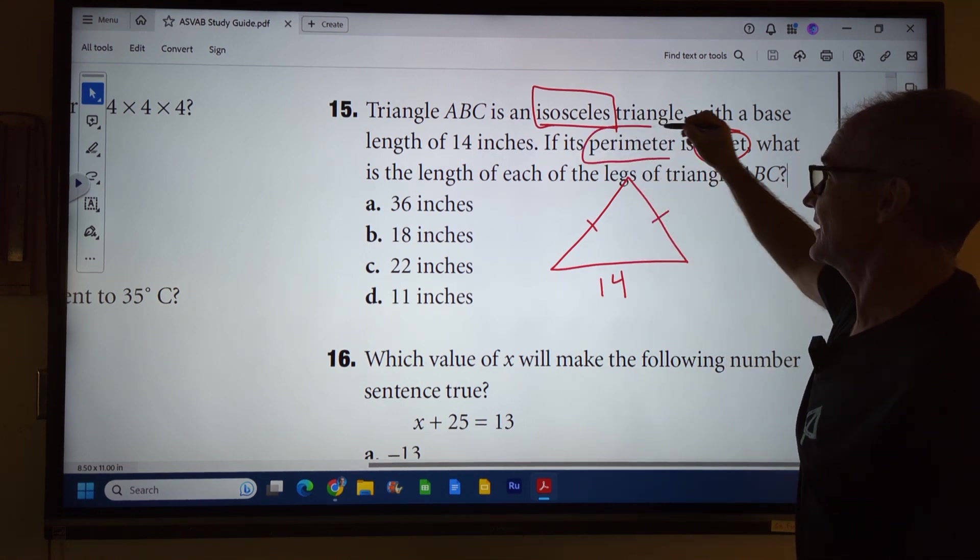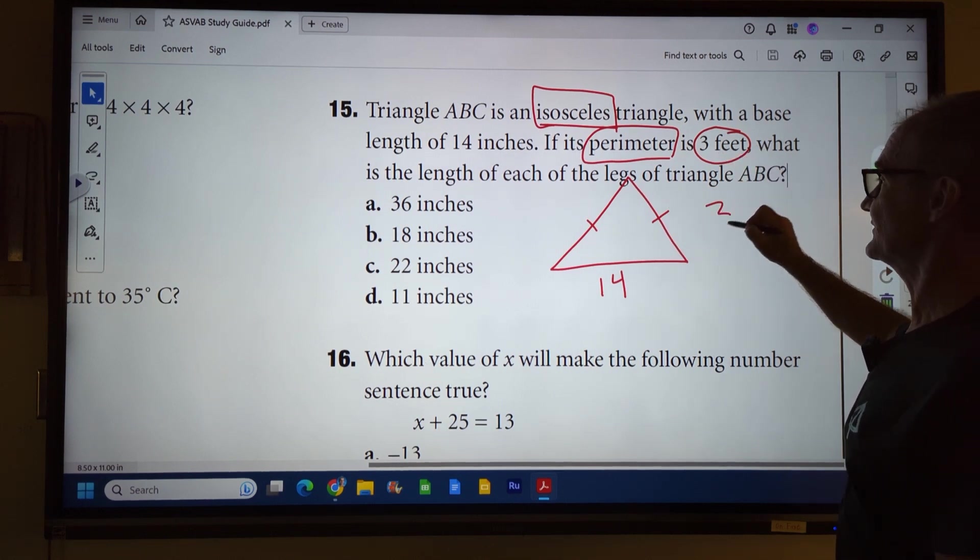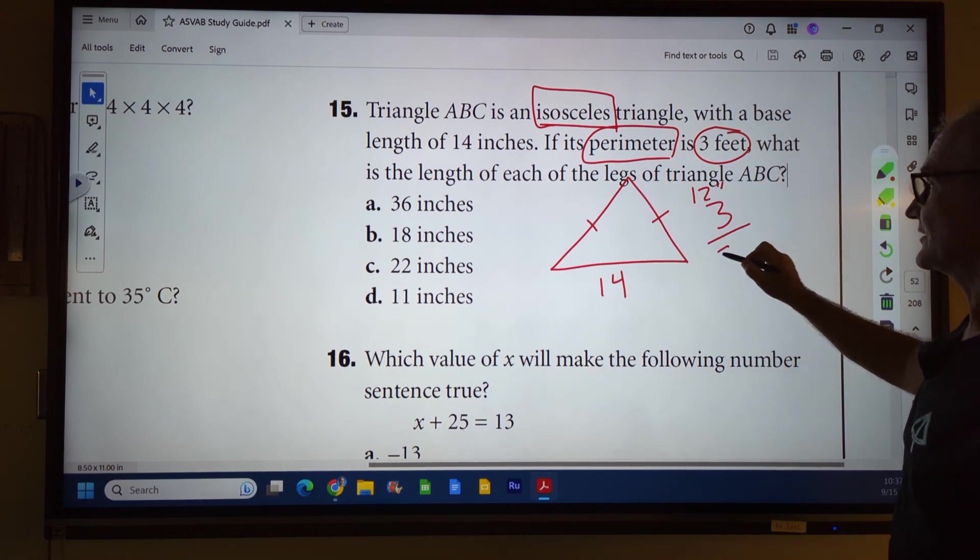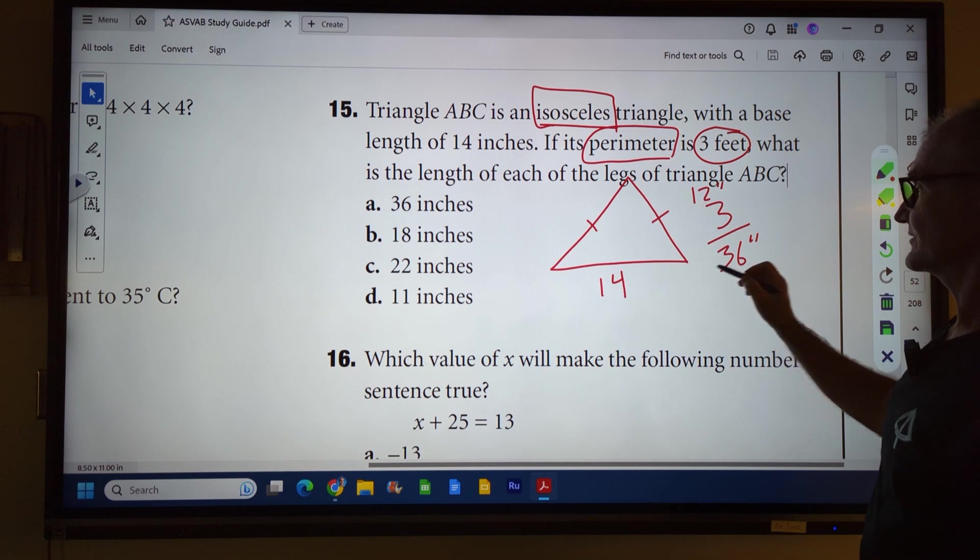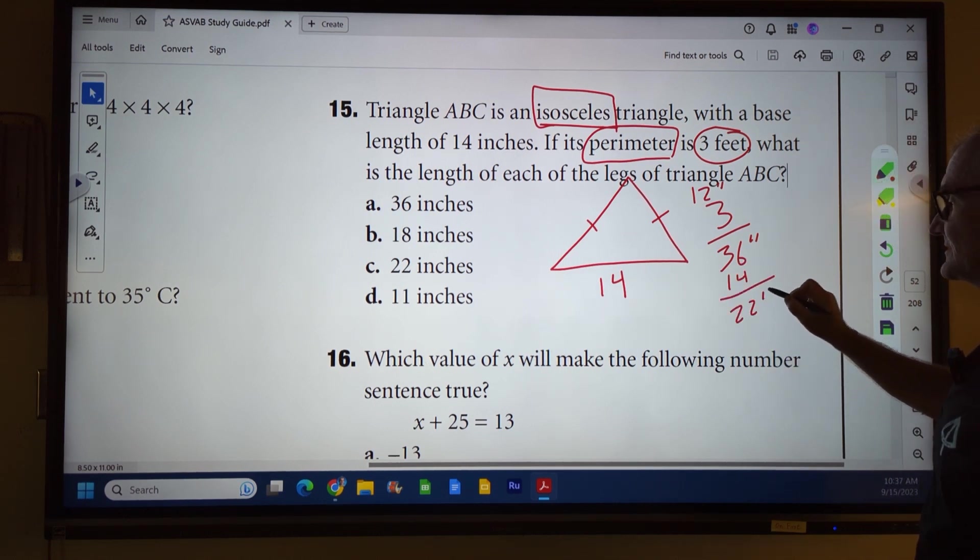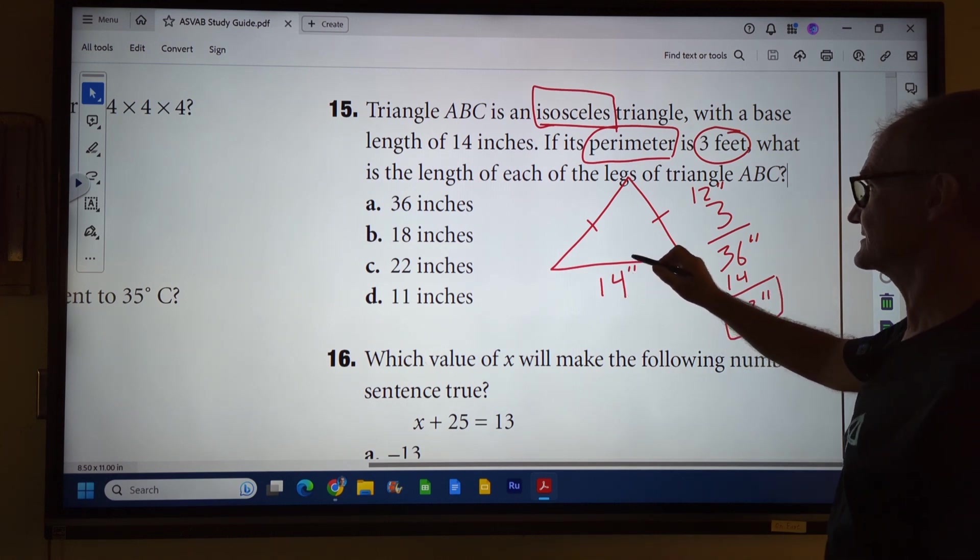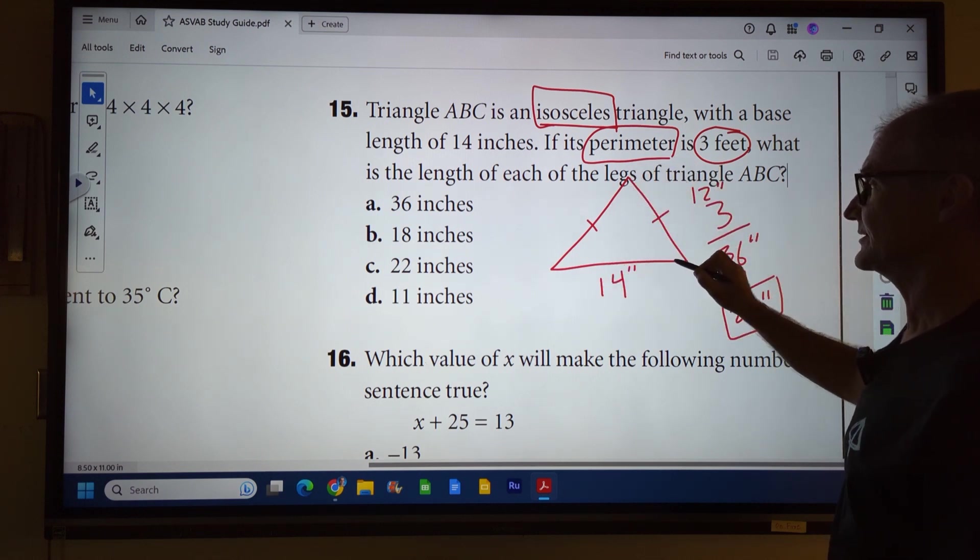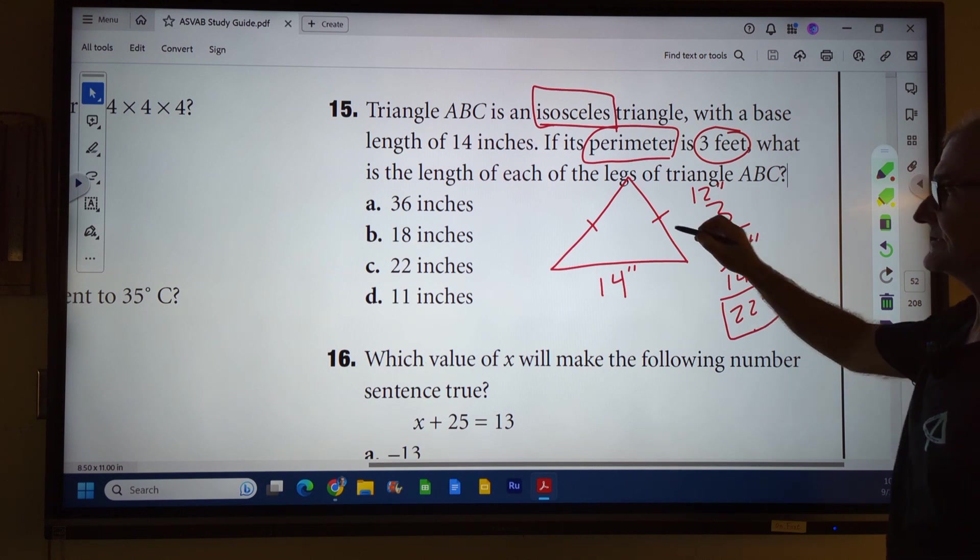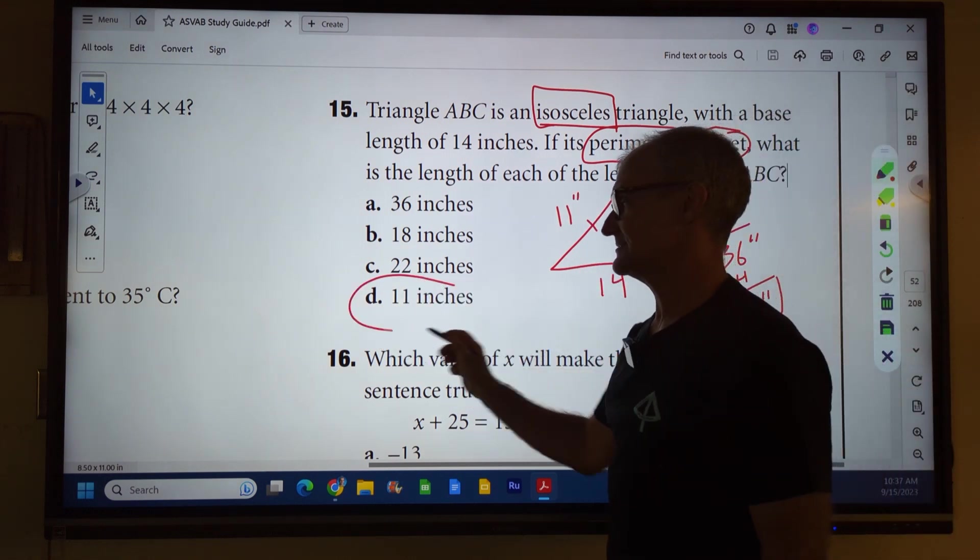Perimeter means all the way around the outside. So three feet is three feet times 12 inches, 12 inches to the foot, to give me all the way around it's 36 inches. 36 inches minus that 14 inches is going to give me 22 inches. So that means 22 inches plus 14 inches is 36 all the way around. These two are equal and they add up to 22. So each one has to be 11 inches. Correct answer D.